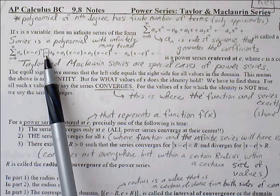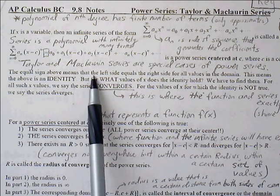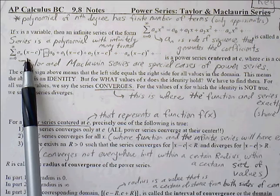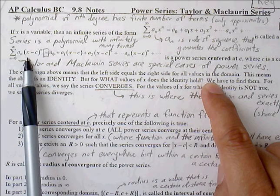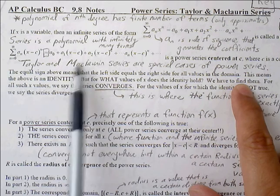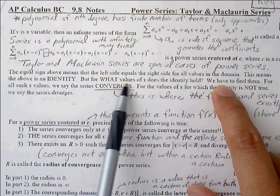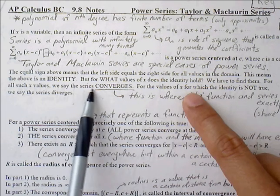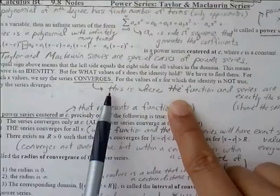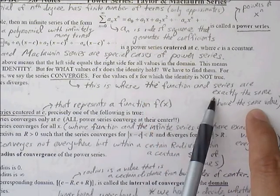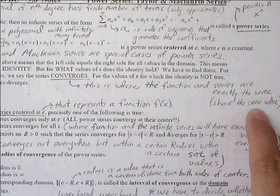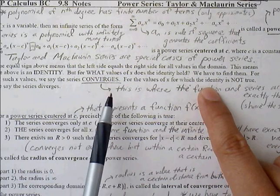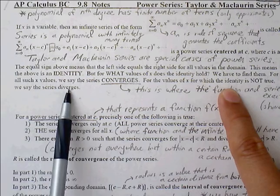The equal sign means that the left side — the original function — equals the right side for all values in the domain, making it an identity. But we have to find which values of x this identity holds for. For all such values where the function and the series share the same values, we say the series converges. For values where the identity does not hold, we say the series diverges.